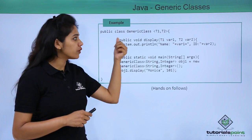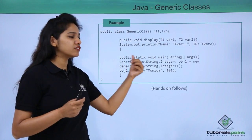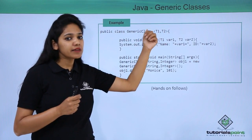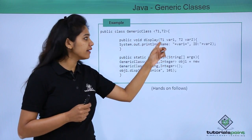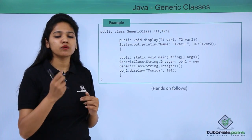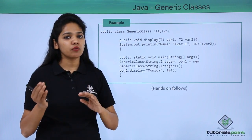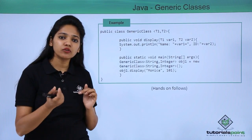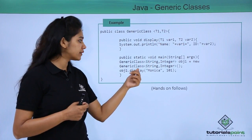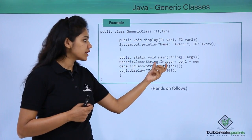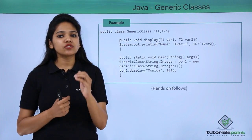Similar to generic methods, you also have generic classes. In a generic class, you provide type parameters — for example T1 and T2 — to indicate which data types the class can accept. You could name them A1, A2, B1, B2, or anything else. This allows a single class to accept not just integers but also strings or other types. When you know your class will handle certain value types, you define them generically. In the main method, you instantiate the generic class by specifying the actual types, such as string or integer.